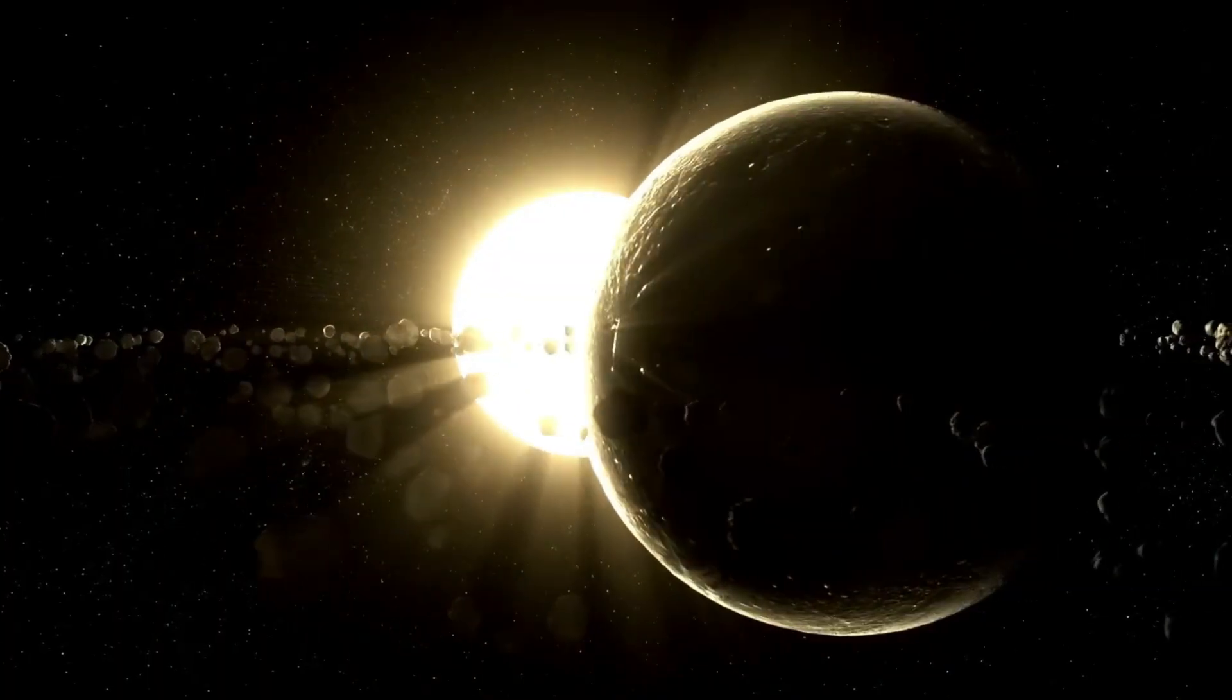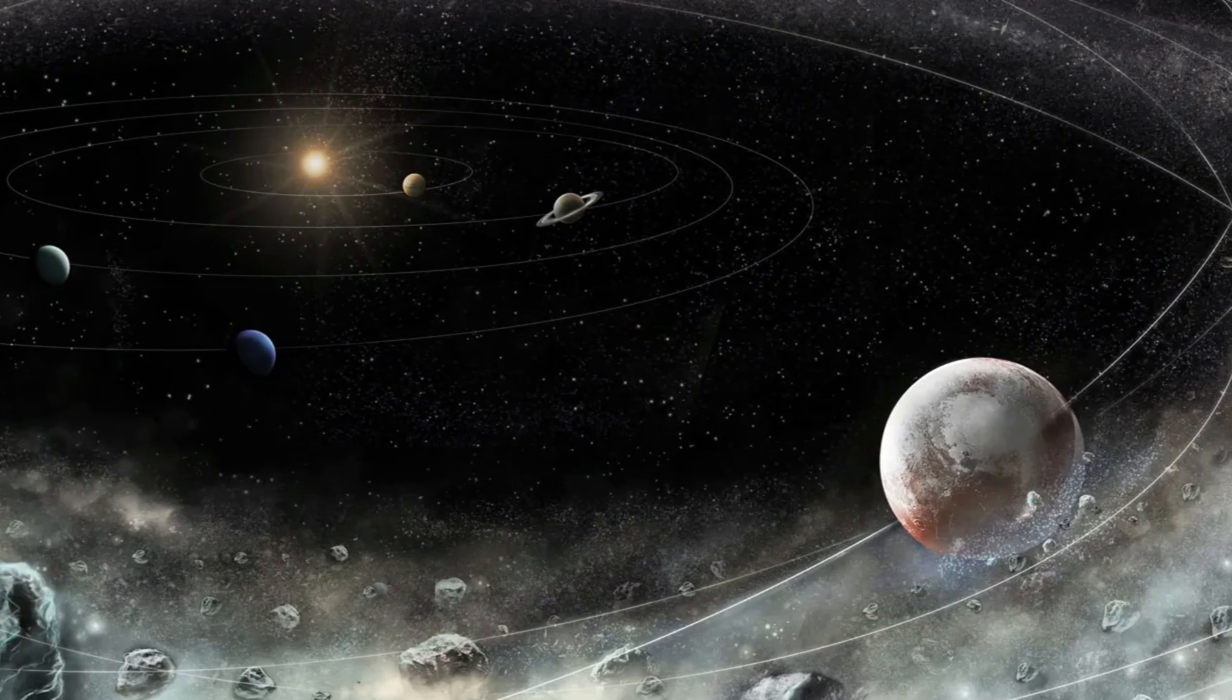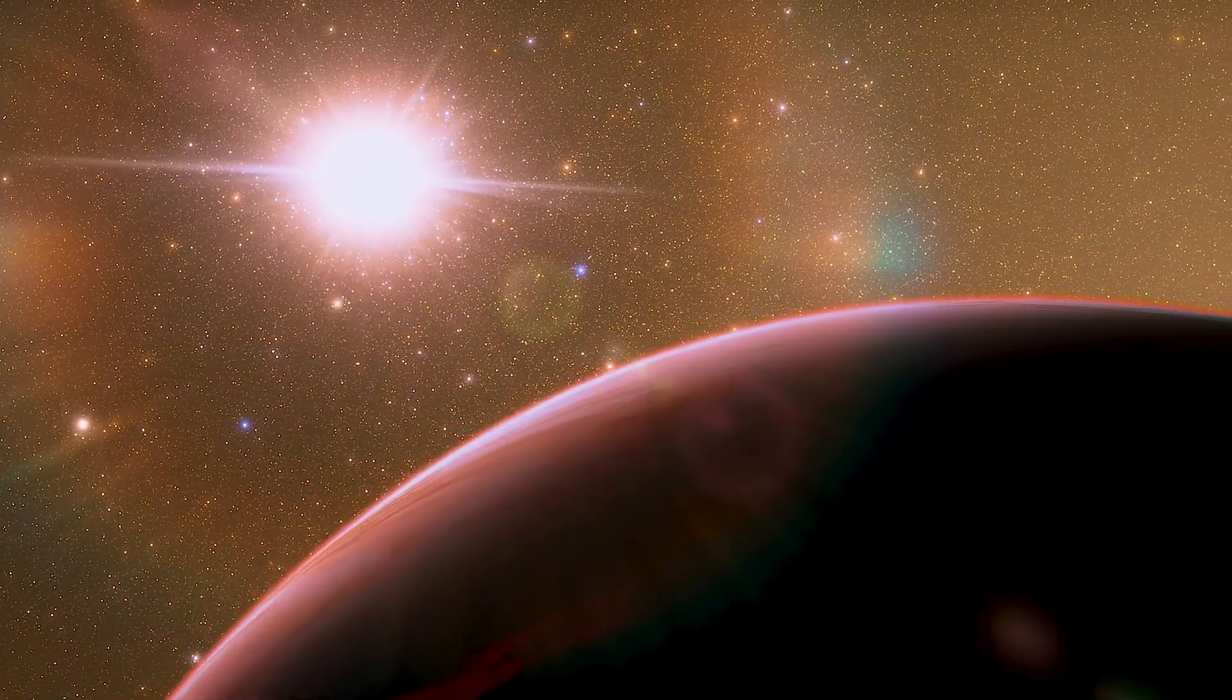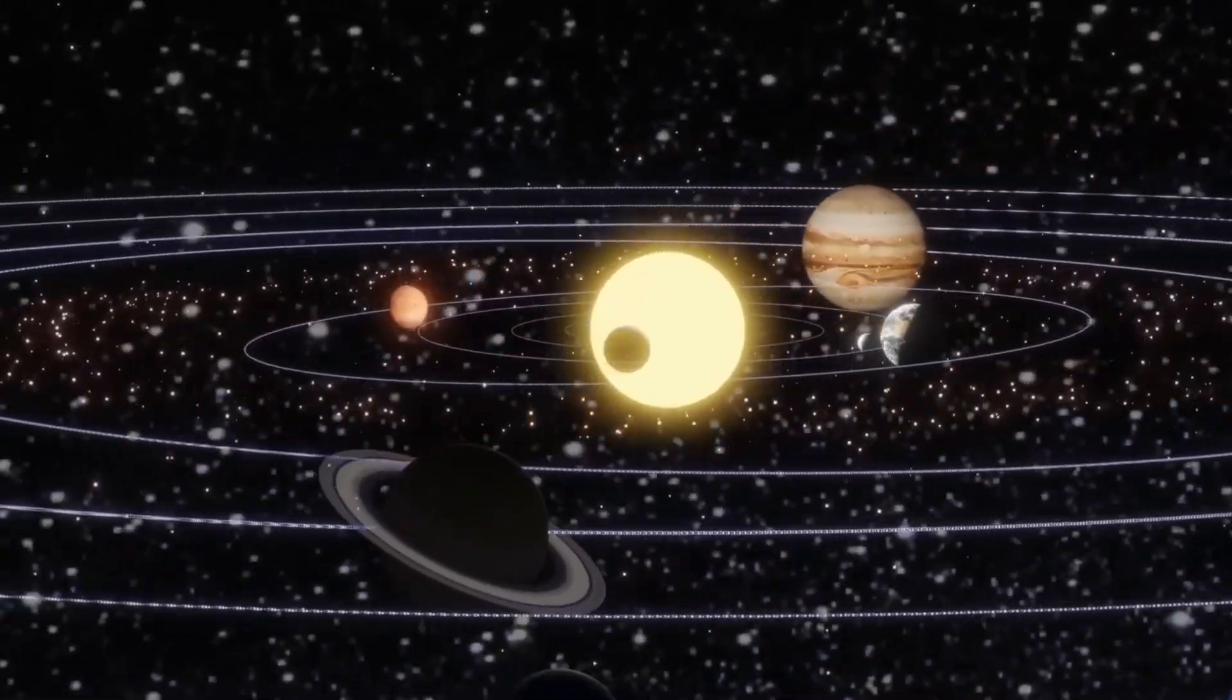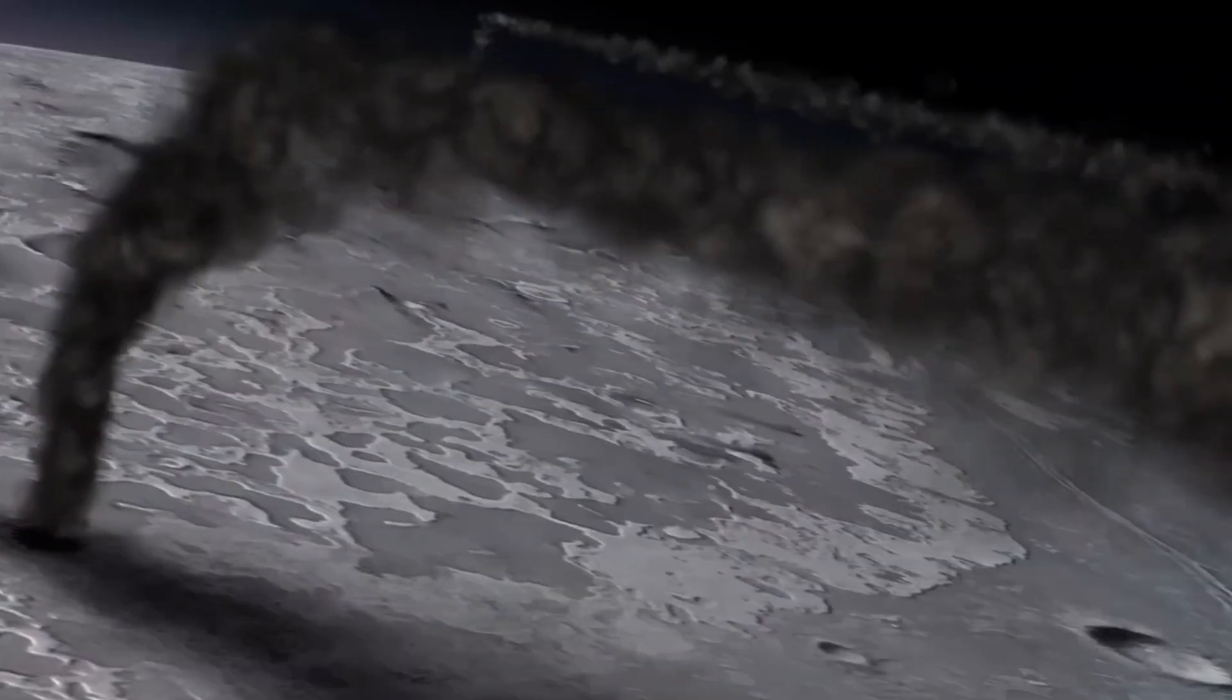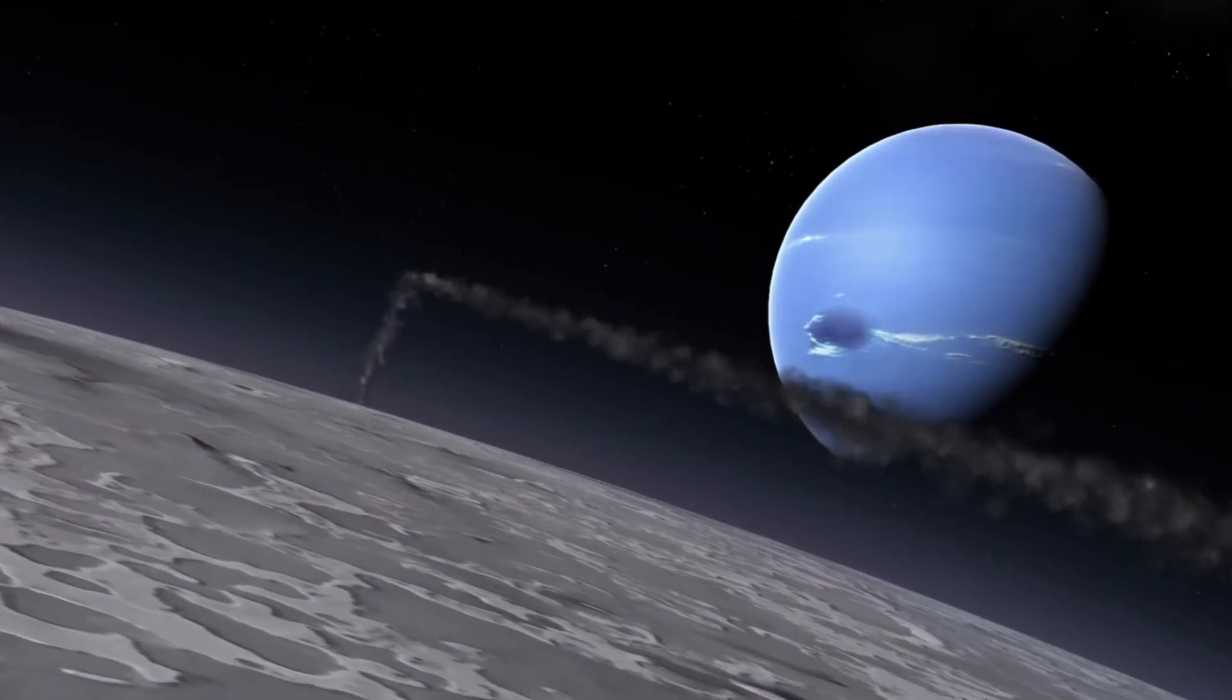The gravitational pull of Planet 9, estimated to be about 5 to 10 times the mass of Earth, is believed to be responsible for this strange clustering of KBOs, pulling them into a distinct predictable pattern. This discovery is groundbreaking for a few reasons. First, it shows that the solar system may be much more complex than we once thought, with regions far beyond Neptune still influencing the movement of objects in ways that we are only beginning to understand.